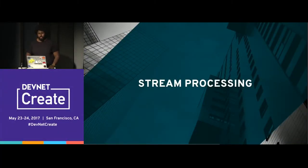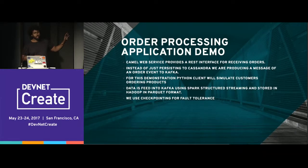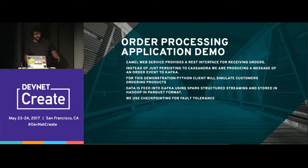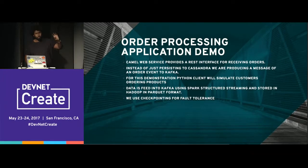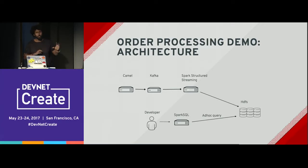For the demo app: I've got a Camel web service, and every time a JSON POST request comes in, I do two things — I store it in a Cassandra database and also send a message to Kafka. Once the message is sent to Kafka in JSON format, I use Spark Structured Streaming to listen for those incoming messages and store them in a data frame.